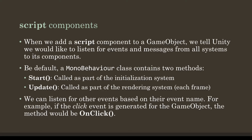By default, when we create a script component, it automatically creates a class that is a child of MonoBehavior. The MonoBehavior class contains two default methods: the Start method, which is called as part of the initialization system, and the Update method, which is called as part of the rendering system, or each frame. We can also listen for other specific events based on the event name, corresponding to whatever components are part of the game object. For example, if the game object had a component that generates or listens for a click event, we could add an onClick method in our script component code to listen for and react to that event.